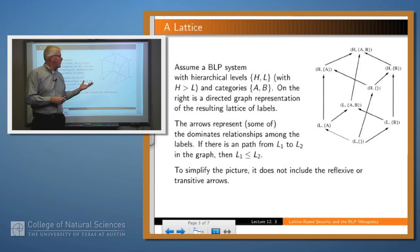When you look at a picture of a lattice, you'll kind of see why it's called that. So this is a particular lattice for a particular set of labels. In this case, the hierarchical components are H and L standing for high and low, so high is greater than low, and we have two need-to-know categories, A and B. So I drew actually part of the lattice here, and the arrows represent part of the dominates relation over this set of labels.